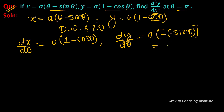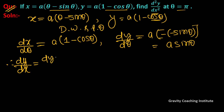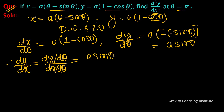Therefore dy/dx equals dy/dθ divided by dx/dθ, which gives a sinθ upon a(1 - cosθ). The 'a' cancels, so dy/dx = sinθ / (1 - cosθ).